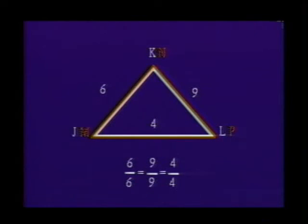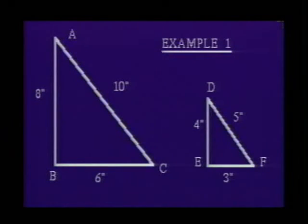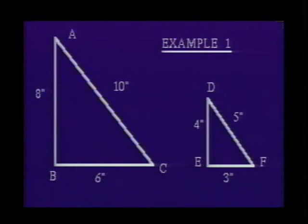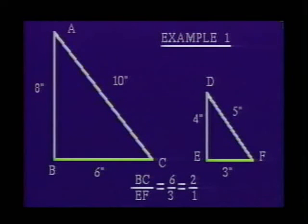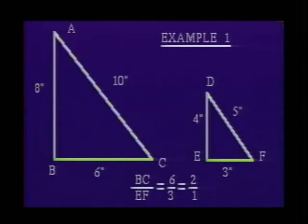Let's look at an example. Example 1: Let us determine if the two following triangles are similar. If triangle ABC is similar to triangle DEF, then the corresponding sides must be proportional. Side BC must correspond to side EF, since these are the shortest sides of both triangles. The ratio of side BC to side EF is 6 to 3, or in simplest form, 2 to 1.